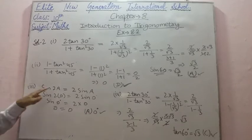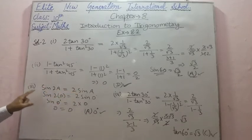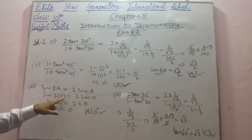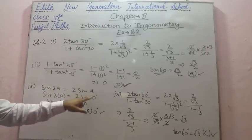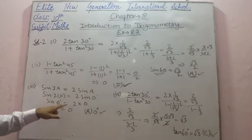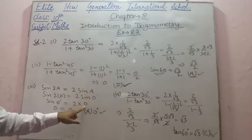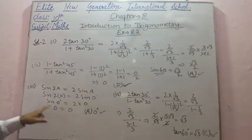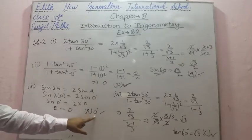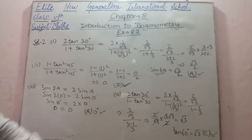Third part: sin A = 2 sin A. We need to find the correct value of A. When we put A = 0°: sin(2×0°) = sin 0° = 0, and 2 × sin 0° = 0. So LHS = RHS, therefore 0° is the correct answer and option A is correct.